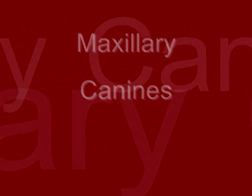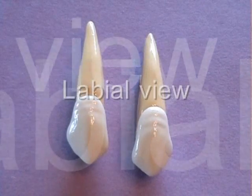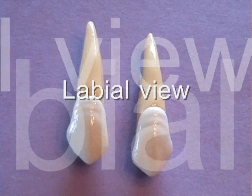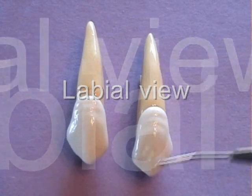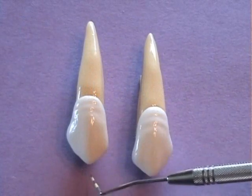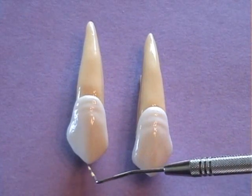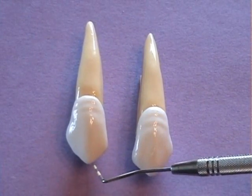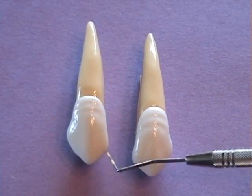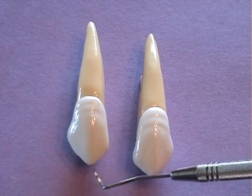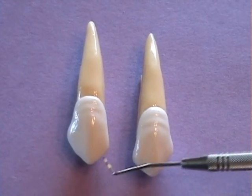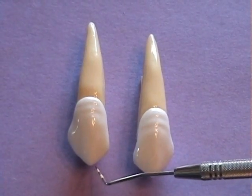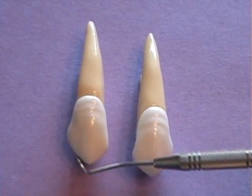The maxillary canine has an incisal edge that comes to a cusp tip. The mesial cusp slope is shorter than the distal cusp slope.